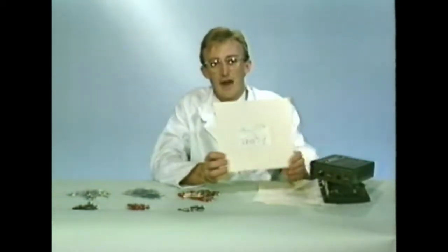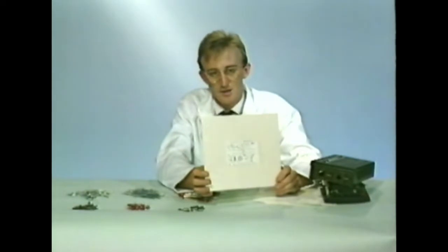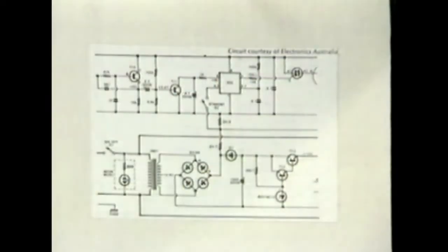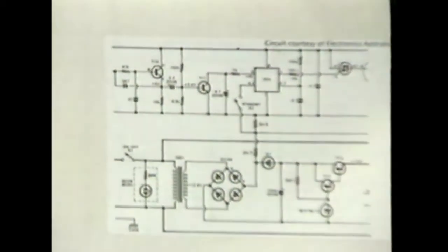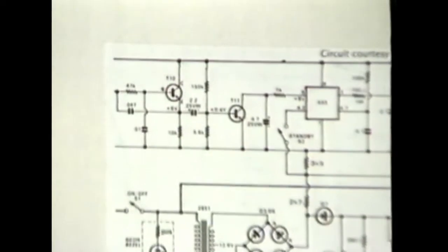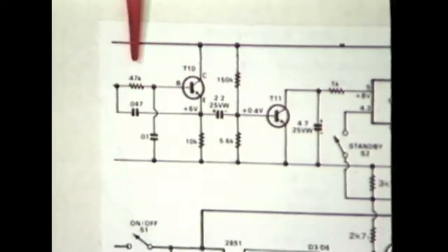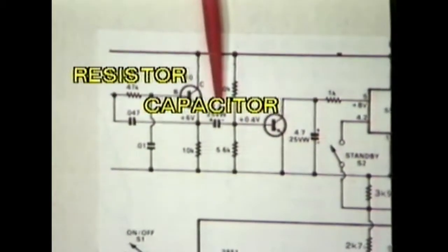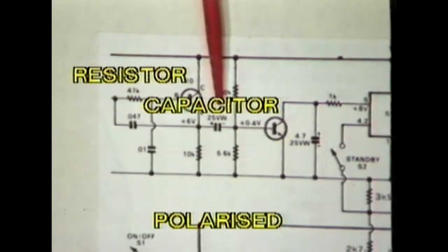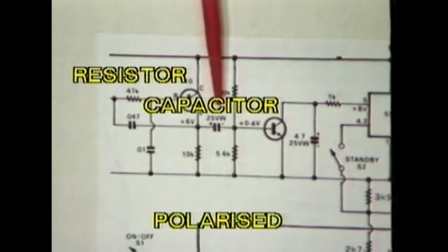Whether you're building a model airplane, a boat, or even a house, you need a plan. And this is a plan of an electronic device. The lines represent the connections between various components, and each component is represented by a symbol. The wiggling line here indicates a resistor. Here is a capacitor — the plus sign shows it's polarized, meaning it must only be connected in one way. Many components are polarized, as you'll see later.